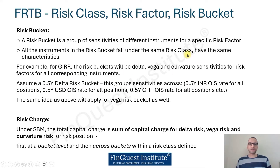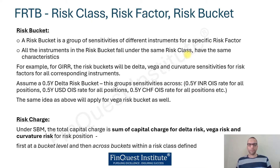A risk bucket is defined as a group of sensitivities of different instruments for a specific risk factor. Building on our GIRR example, under the Sensitivity-Based Method (SBM) there are three main risk buckets: delta, vega, and curvature risk sensitivities. We have a separate video on linear and non-linear risk, but here is a quick recap.